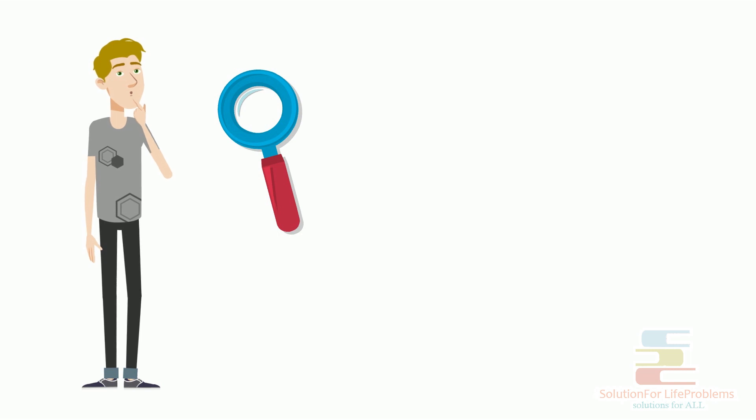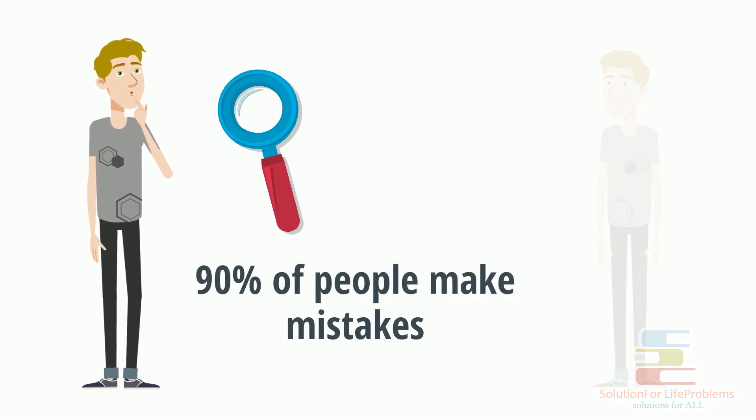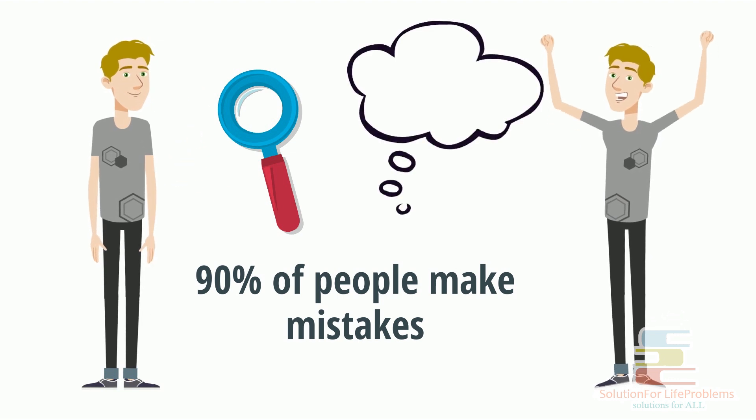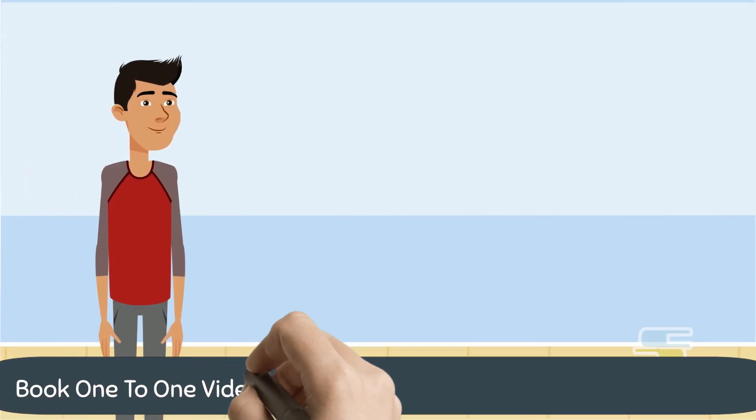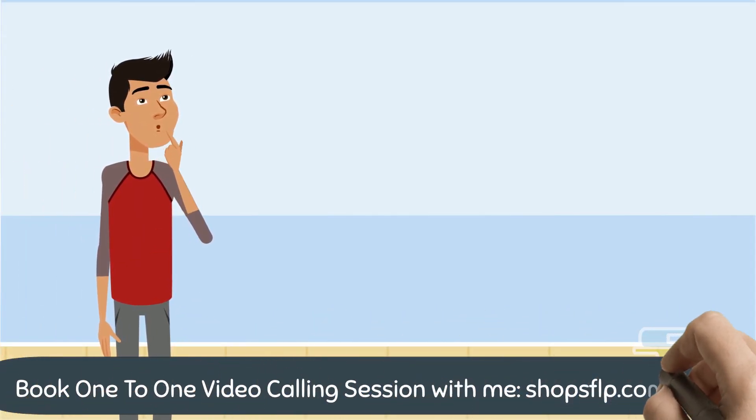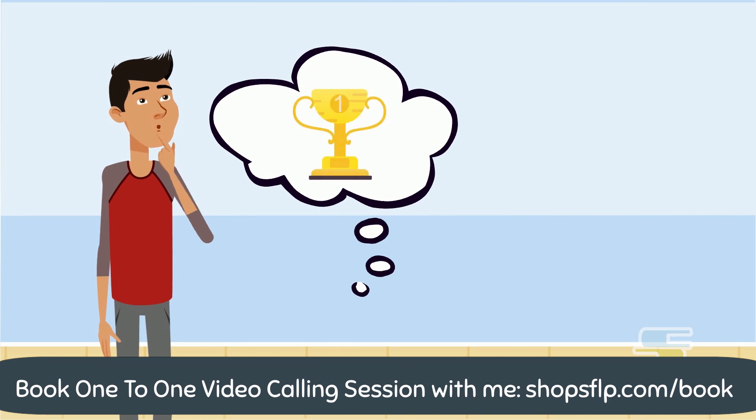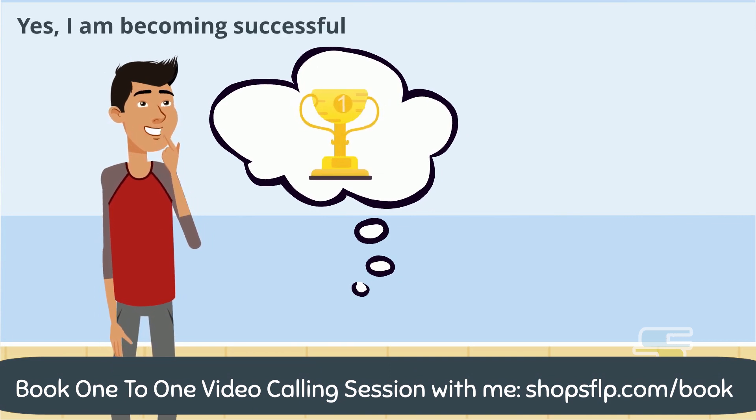This is where 90% of people make mistakes. They just clear why and what and take the shot immediately after that without thinking how to do it and they become failures. Once you clear why and what, imagine that thing in your mind. That yes, I am becoming successful in that work.